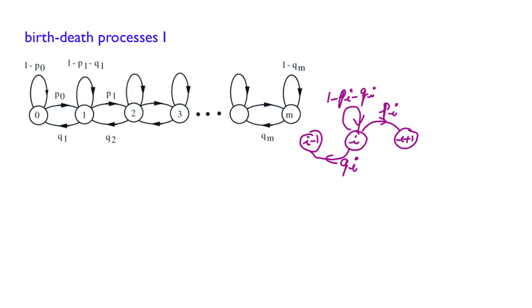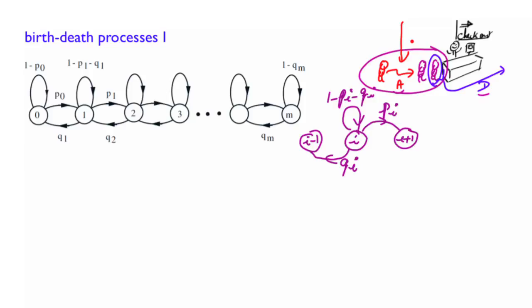An example of a chain of this kind was the supermarket counter example that we discussed before, where the states represented the number of customers in the queue. A customer arrives, and the queue increases by 1. A customer leaves, and the queue decreases by 1. Or nothing happens, and the queue stays as it is.